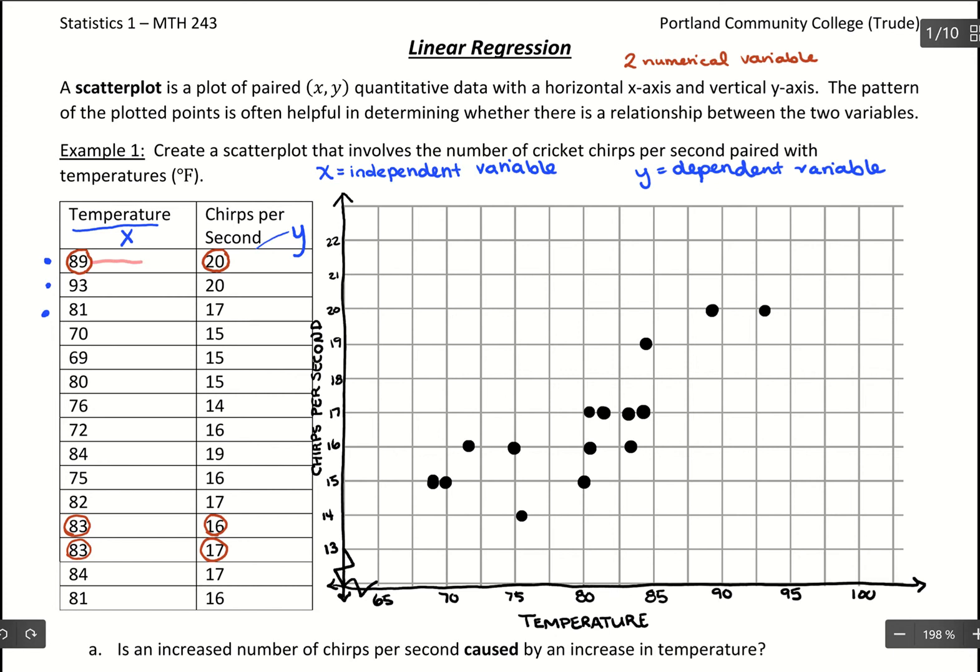For example, this coordinate 89, 20 - what I did is I went to where temperature is 89 and then I have an output of 20, and that gave me this coordinate right here. Then 93, 20 went over to 93 up to 20 and gave me that coordinate right there. So what I did in making this scatter plot is I plotted a dot using these x and y coordinates.